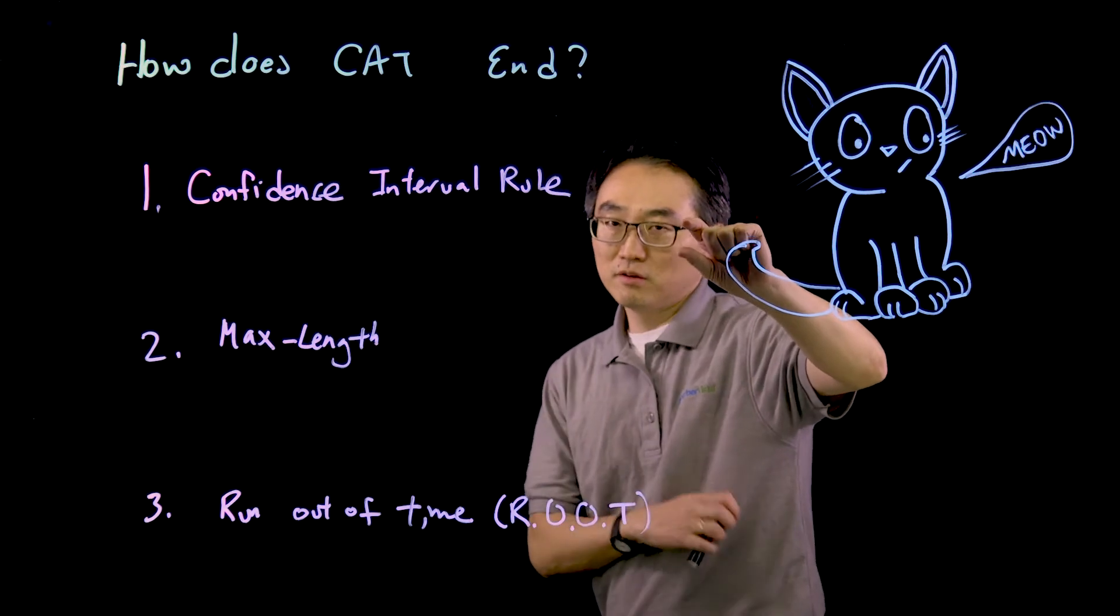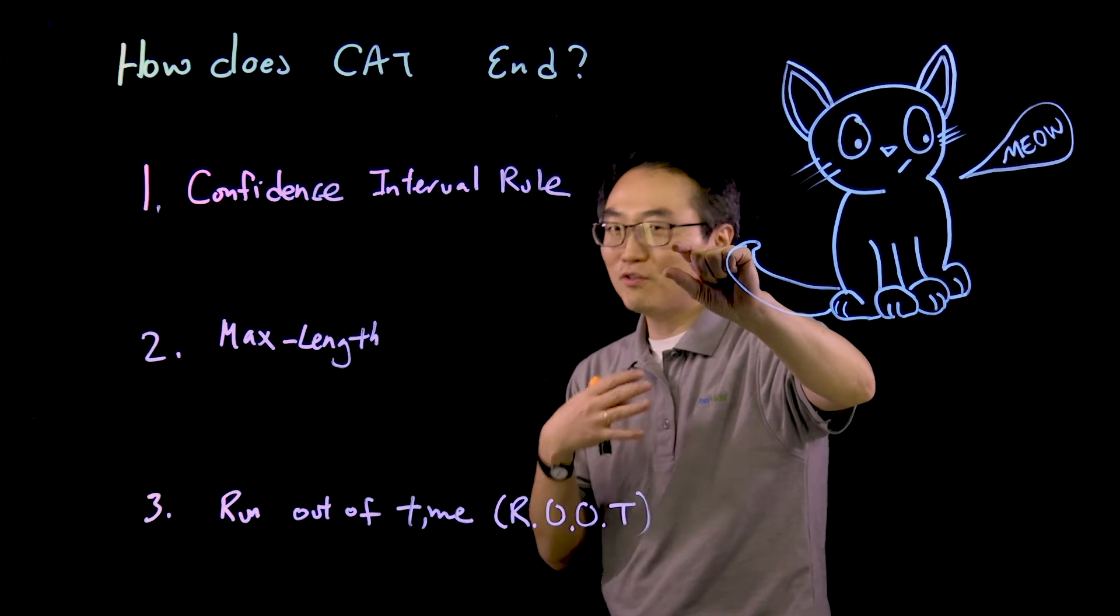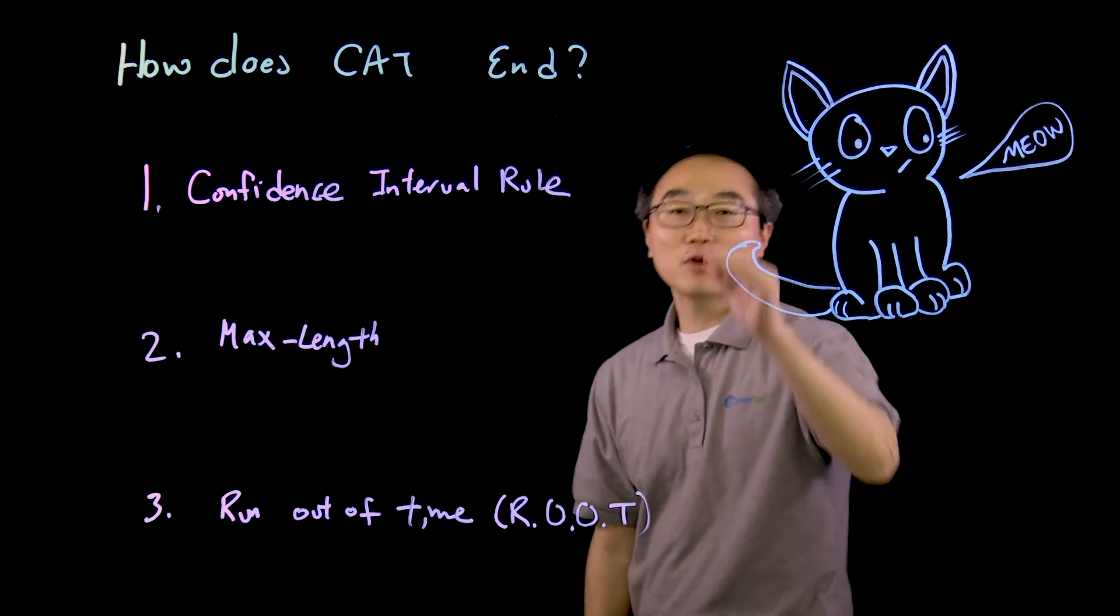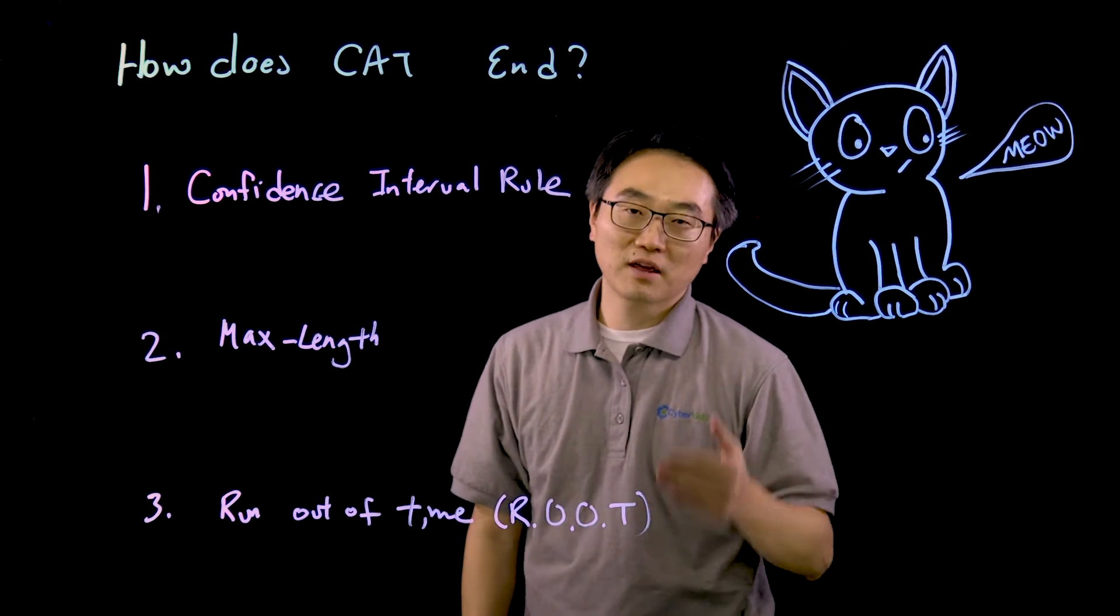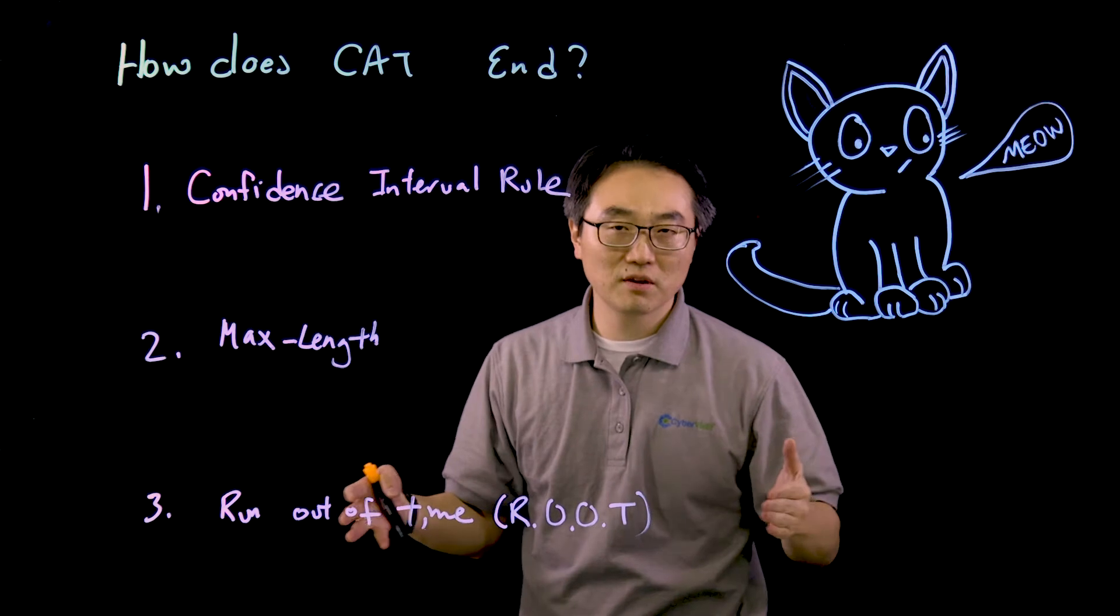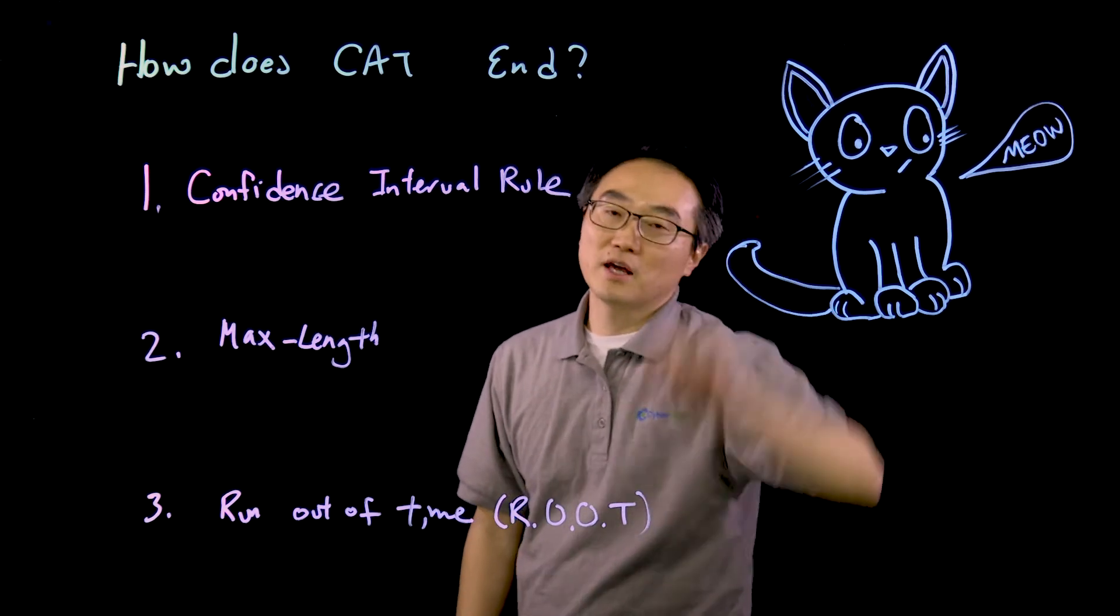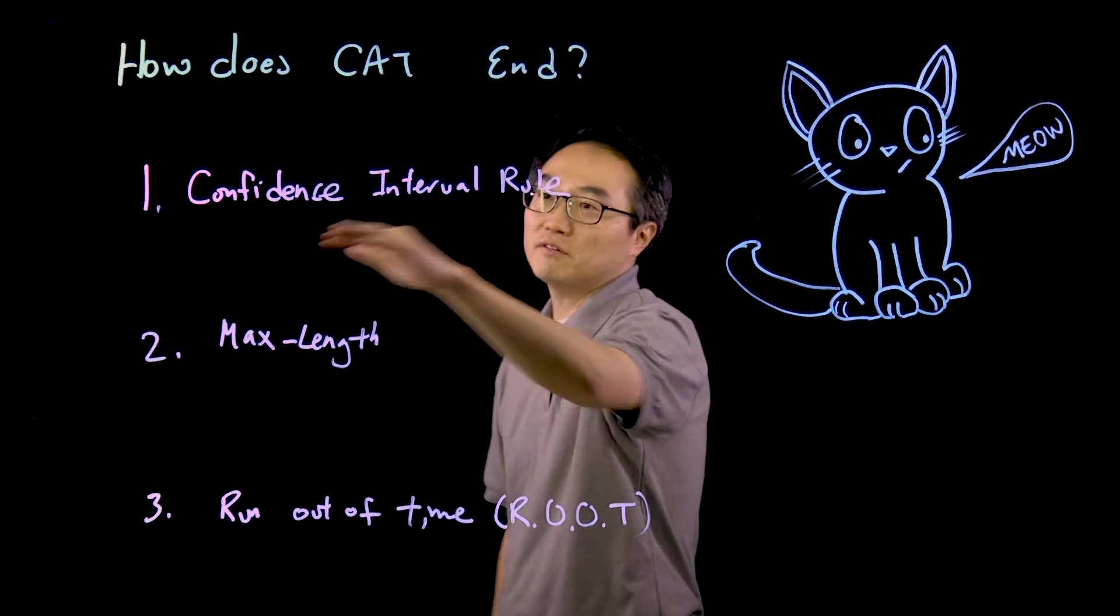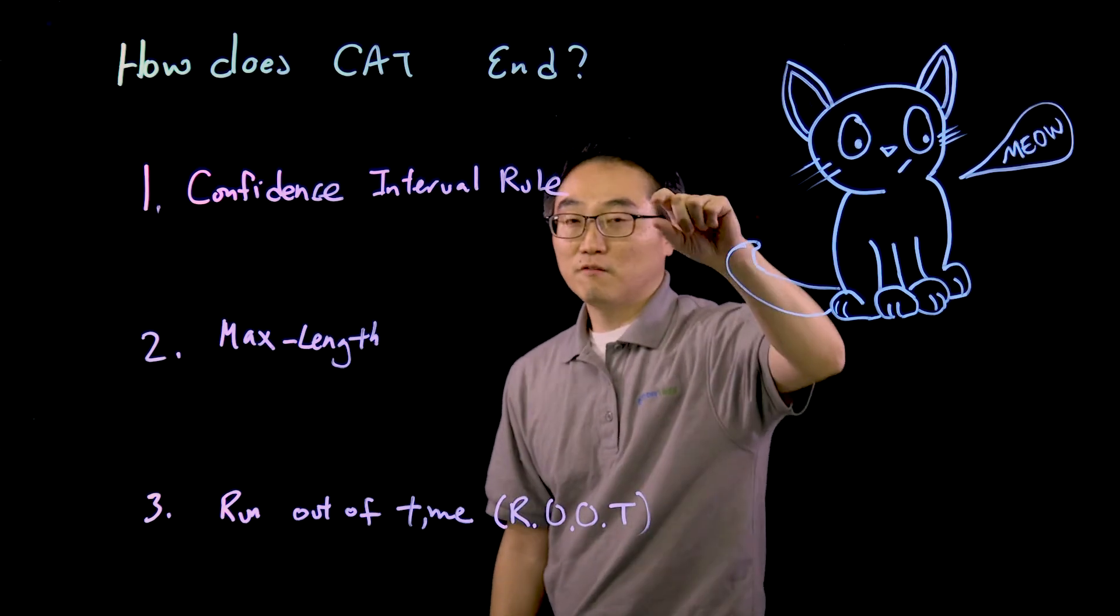When that full interval—they say in the CISSP booklet 95%—they're sure that whoever is in that place is going to pass, they say we don't need to continue the exam. Those candidates have seen at least 100 questions, and we're very sure because the full interval is staying above the passing line. At that point the exam will end. That is the Confidence Interval Rule: 100 questions, full interval above the passing line.